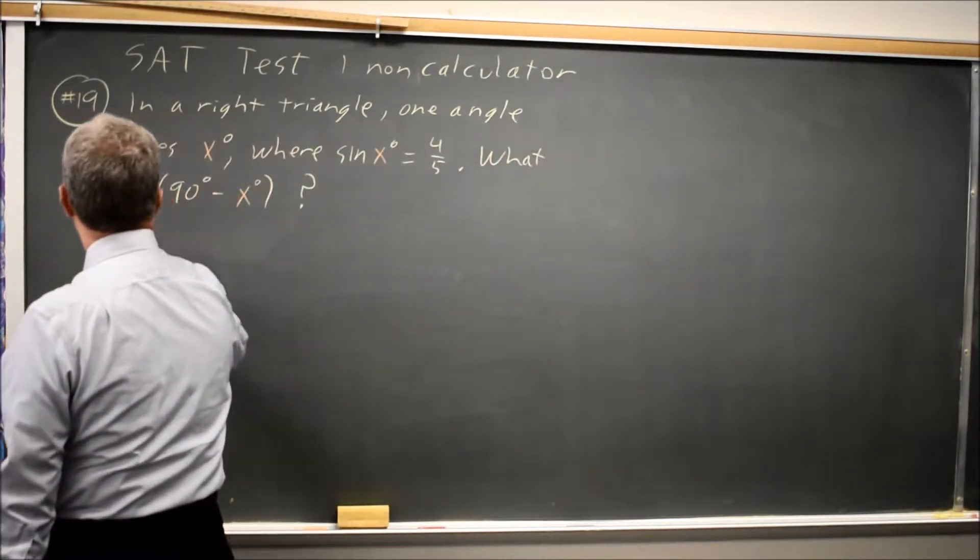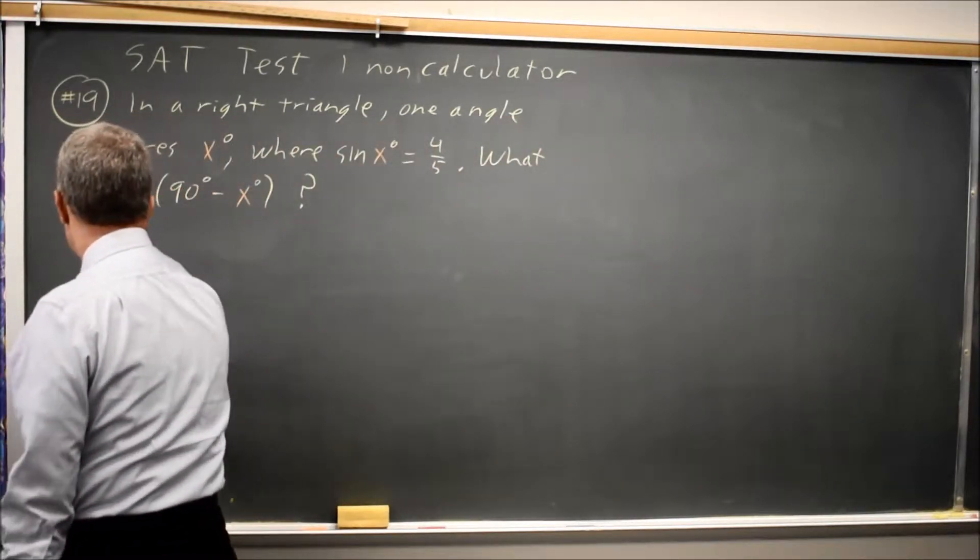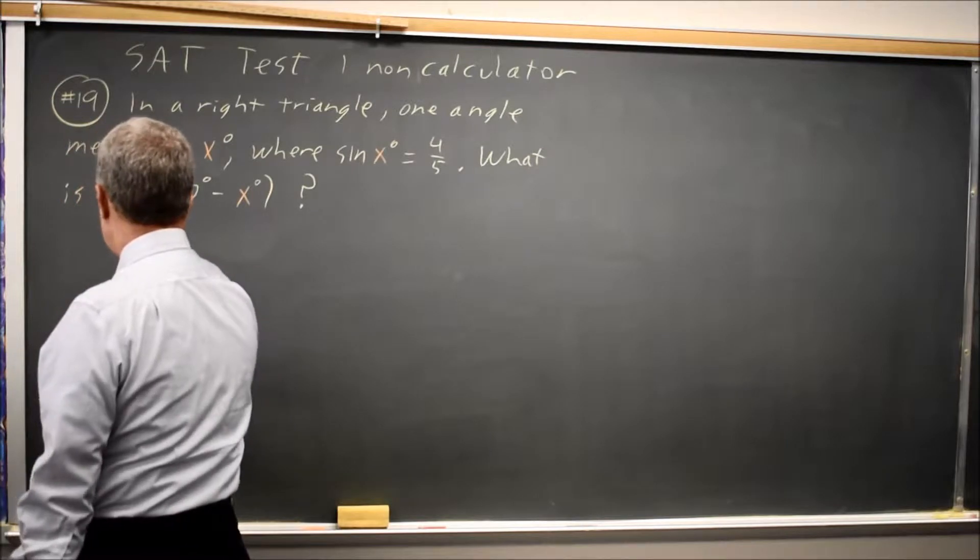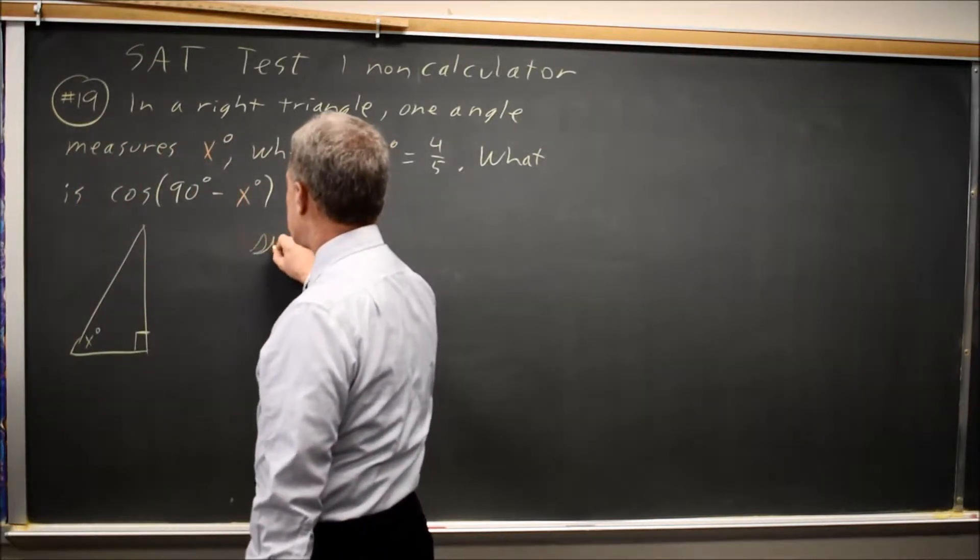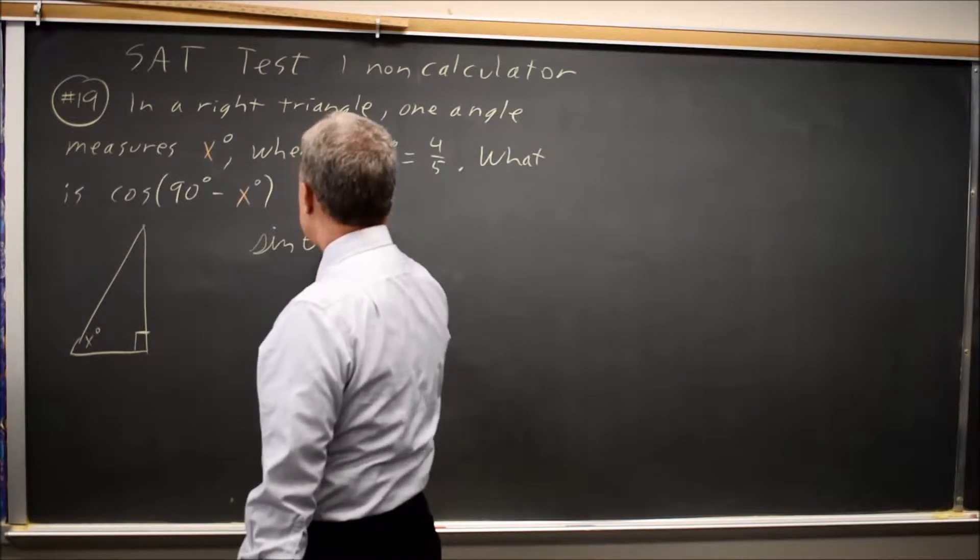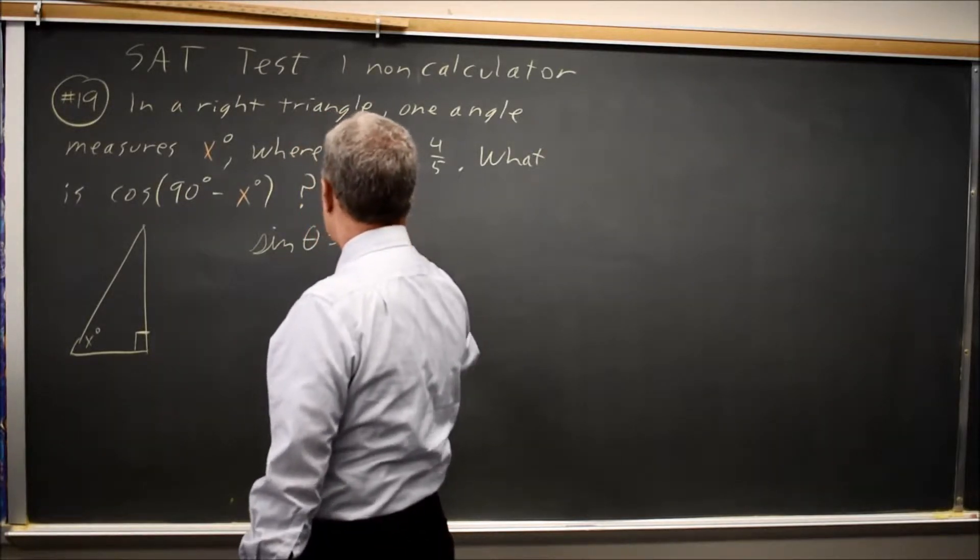So let's draw a triangle with a right angle. We're going to call this x degrees. And the sine of an angle is the opposite side over the hypotenuse.